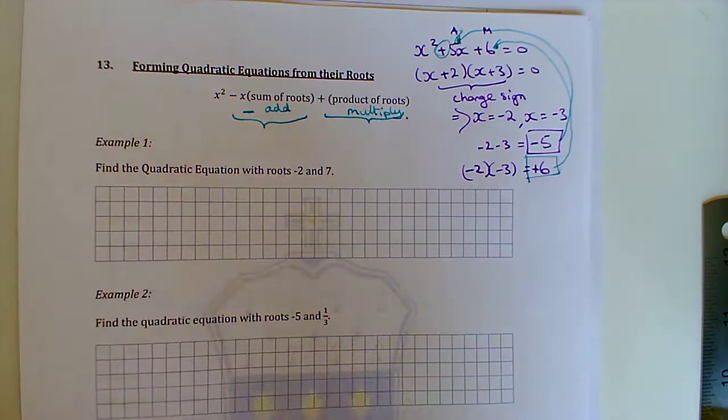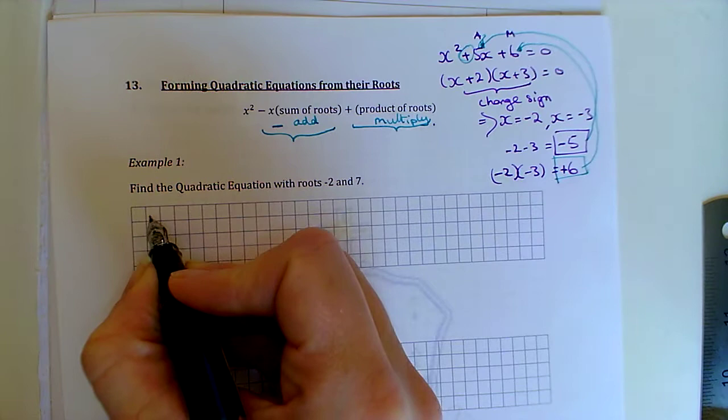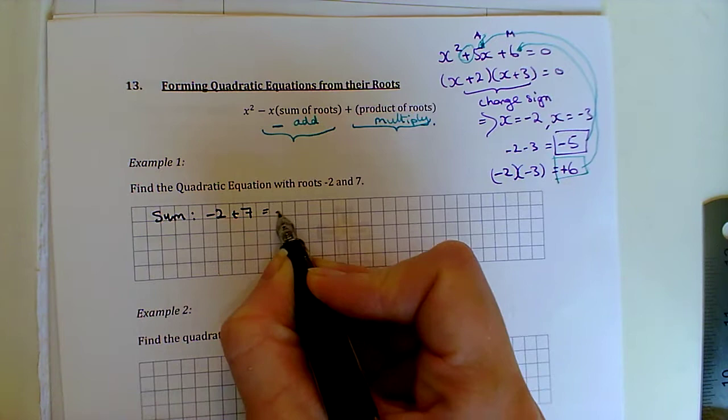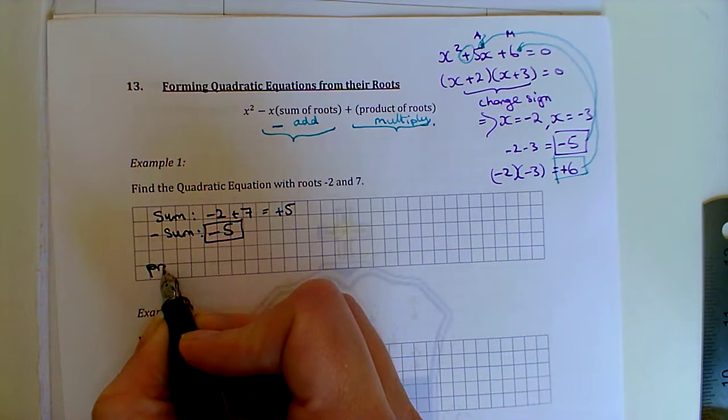Okay, so let's use that shortcut now here to find a quadratic with roots -2 and 7. So x = -2 and x = 7. And if we do the sum of the roots, -2 + 7 gives us +5. And change the sign minus the sum of the roots is -5. So that's going to be my middle term.